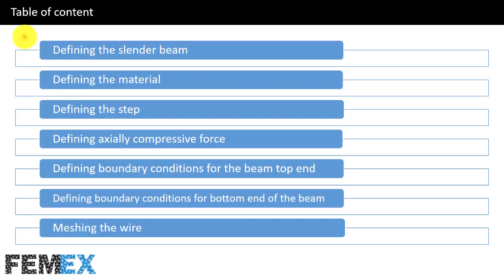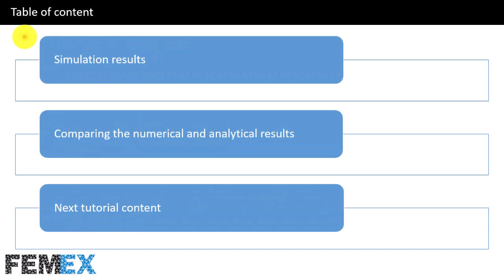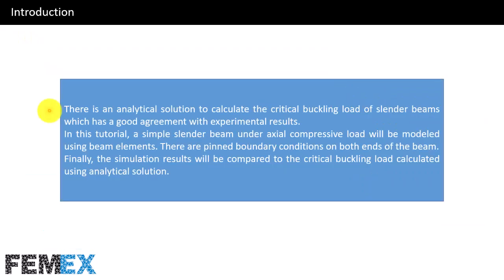This is the table of contents of this tutorial. There is an analytical solution to calculate the critical buckling load of slender beams which has good agreement with experimental results. In this tutorial, a simple slender beam under axial compressive load will be modeled using beam elements, with pinned boundary conditions on both ends. Finally, the simulation results will be compared to the critical buckling load calculated using the analytical solution.